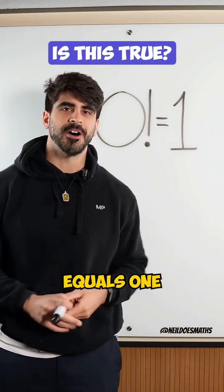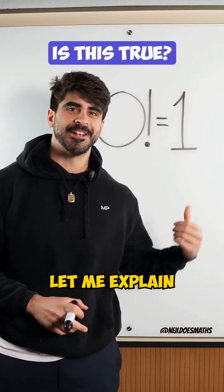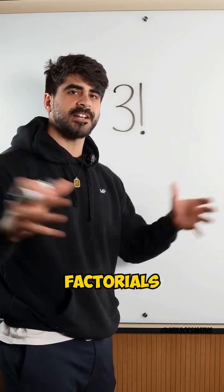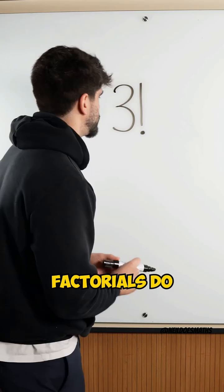Zero equals one. How is this possible? Let me explain. Exclamation marks in mathematics mean factorials. And what do factorials do?